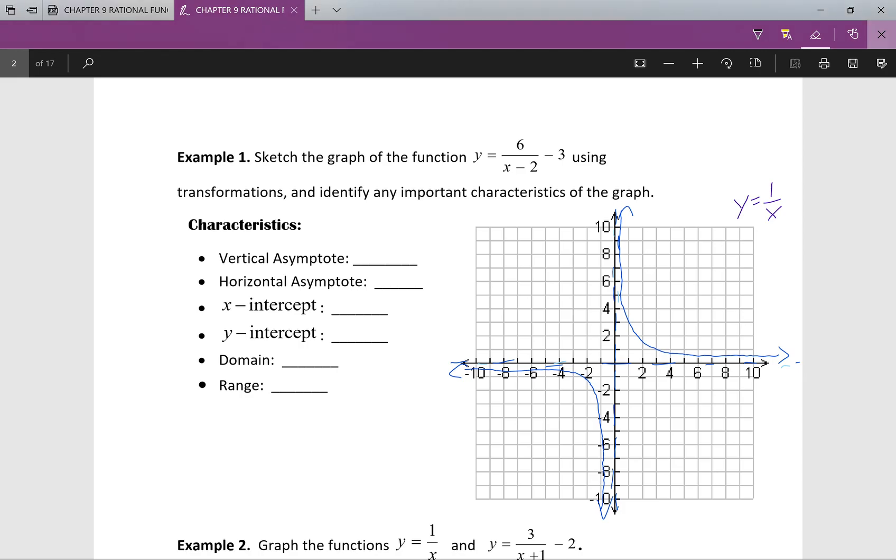Hey guys, how's it going? We're just going to jump right back into this bad boy right here. We want to sketch the graph of the function y equals 6 over x minus 2 minus 3 using transformations, and we want to identify any important characteristics of this graph.